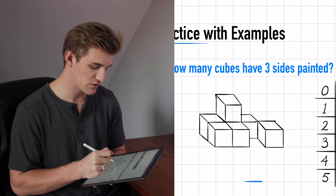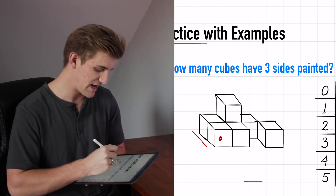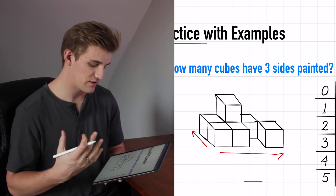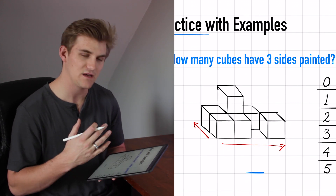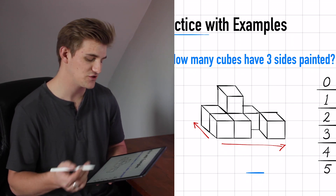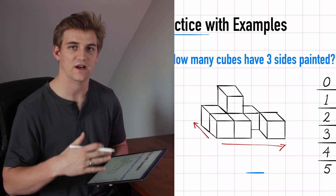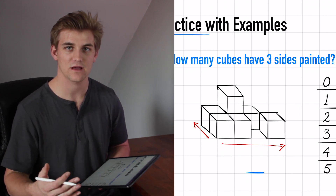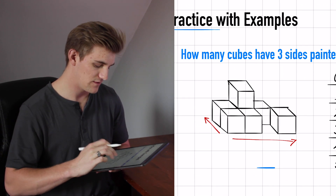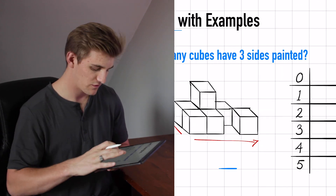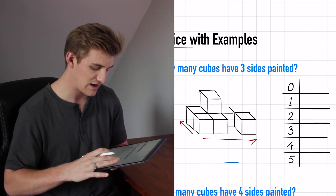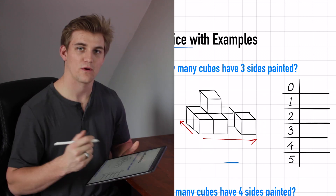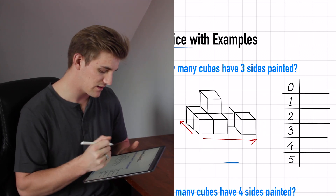Before we start counting, I need to explain the order to count the cubes, because it matters. I always like to start in the front corner and then move back and to the right. This lets you be very consistent, cutting down the time it takes to do these questions. So we'll start at the front and work back and to the left, filling out our table as we go.